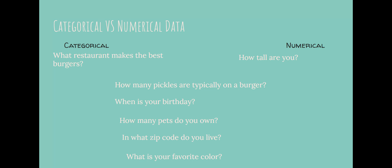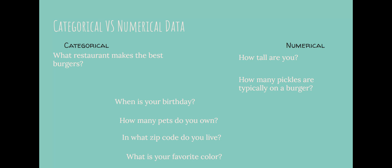What about how many pickles are typically on a burger? Is that categorical data or numerical data? That is numerical because we're saying how many. I'm going to tell you there are two, three, four — however many pickles it is.